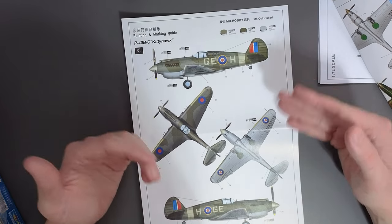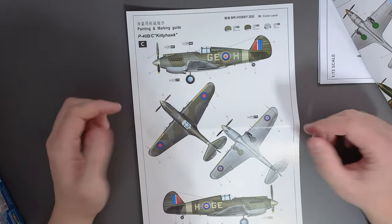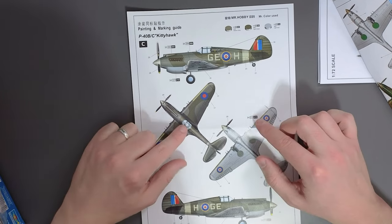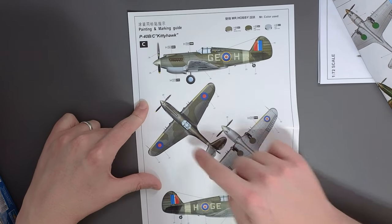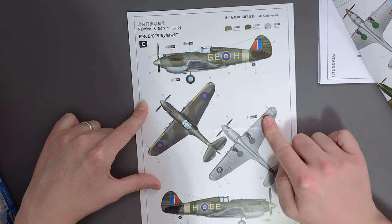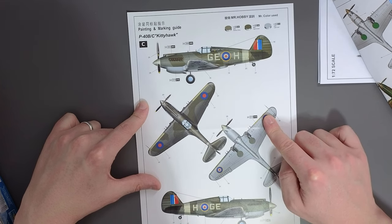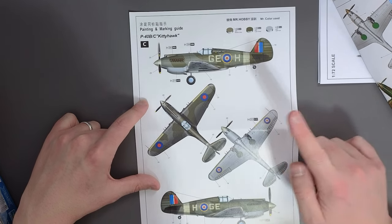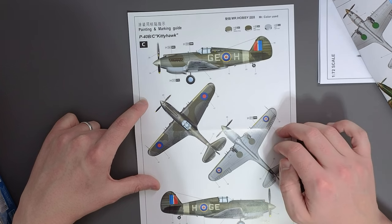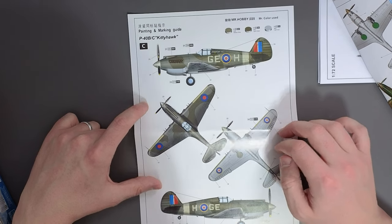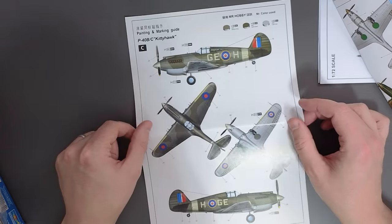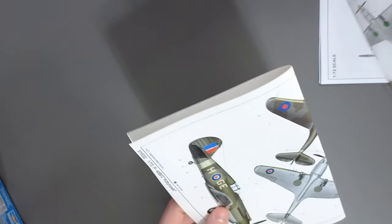It is good though that these are in full colour because it makes it a bit easier to understand what's going on. However I have noticed here that we've got yellow leading edges on the wings here but they don't seem to be mentioned. They don't seem to be a transfer and they don't seem to have a paint colour call out for that. So I would have to figure out my own paint for that. But yeah painting instructions not too bad.